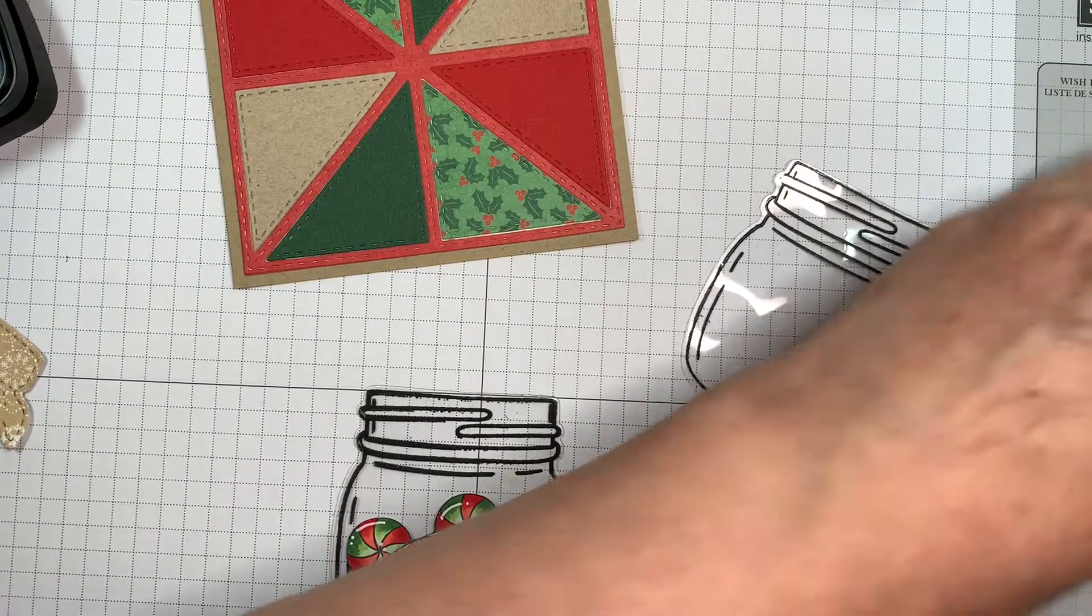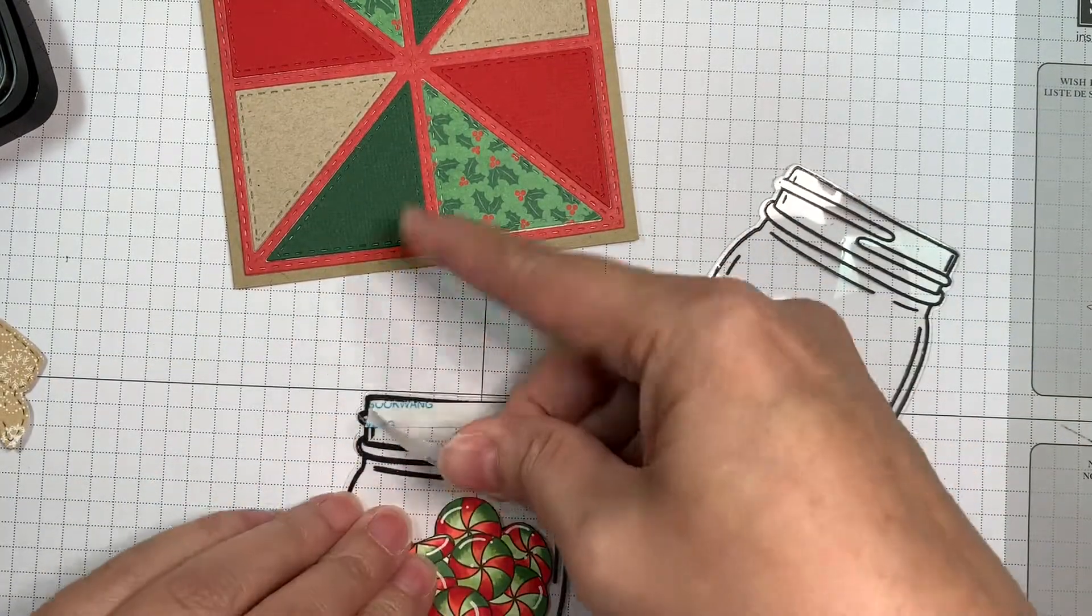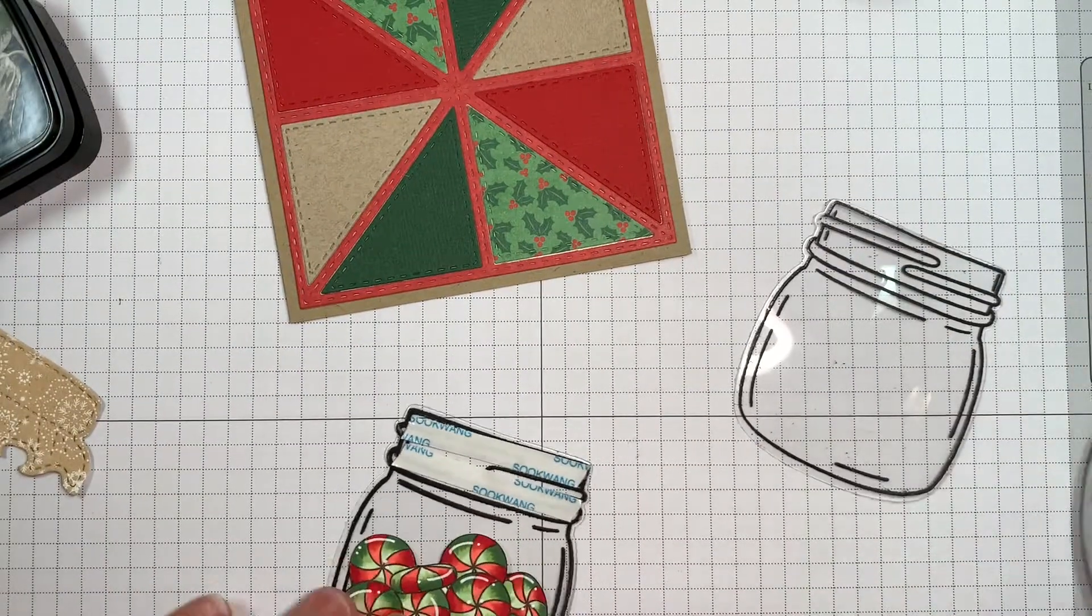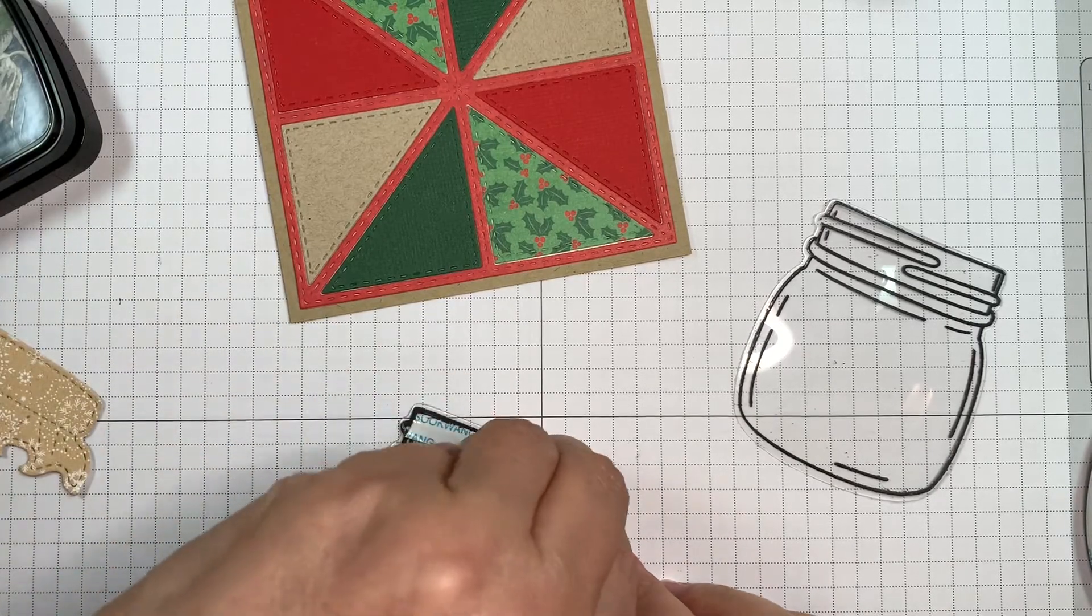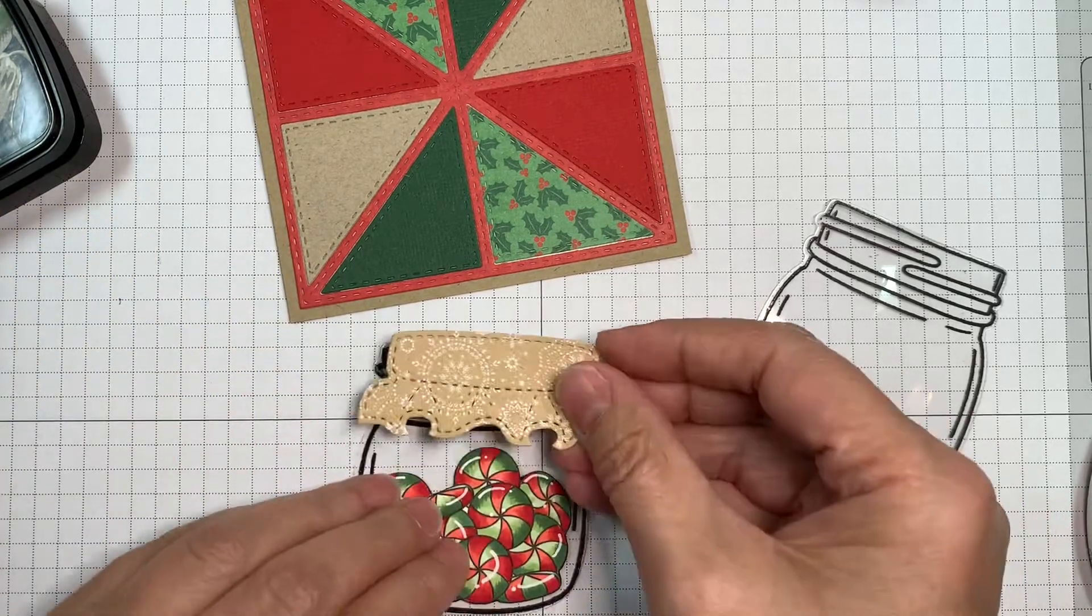And I'm just going to hide my adhesive because that's the best with something like acetate. So I'm just putting a couple of stripes on the top of this jar. And I'm just going to rub it down with my Teflon bone folder to make sure it sticks well. Now this is all in real time. I didn't speed this up at all.